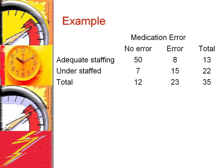For example, the table shows the frequency in which understaffing and medication errors co-occur at our facility. In this table, there were 50 visits in which the clinic was adequately staffed and there were no medication errors. In contrast, there were 15 visits in which the clinic was understaffed and there were medication errors. The first step is to put the table in standard form by dividing the cell values by the total number of visits.